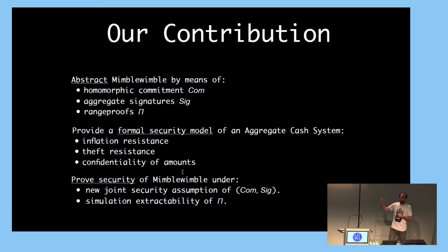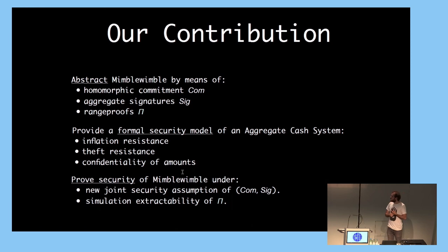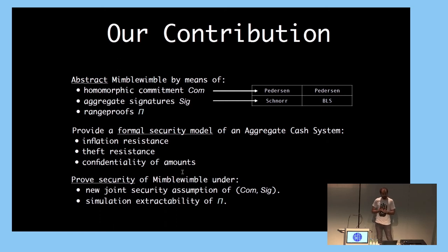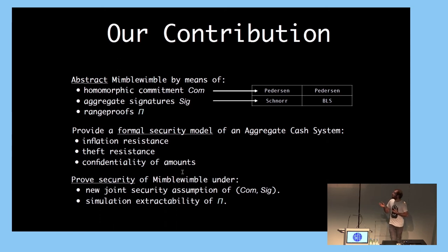This compatibility requirement comes from the fact that a commitment to zero acts as a public key for signing a transaction. We also give examples of a commitment and signature scheme satisfying this property: Pedersen commitments and Schnorr signatures, which is what is used in the current Grin implementation of MimbleWimble; and another example, Pedersen commitments and BLS signatures, which performs better in terms of aggregation because in BLS, signature aggregation is only one group element.